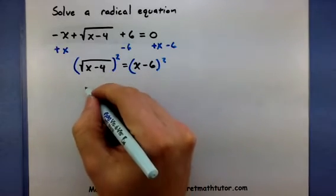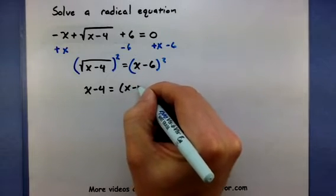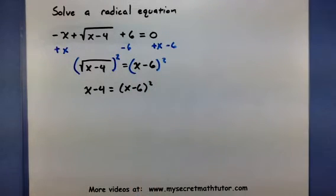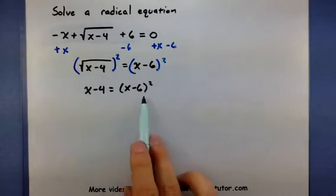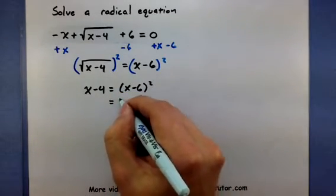So on the left side, this will get rid of our square root. And now I have something a little bit better that I can solve. Now, be careful with the right side. When you square something that has two terms, you actually need to FOIL that out.